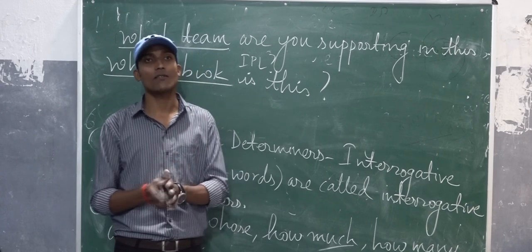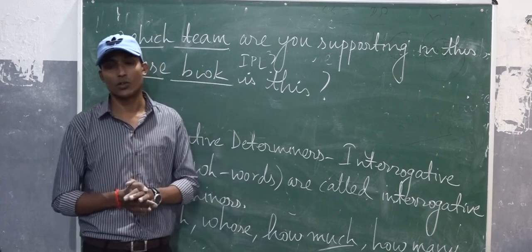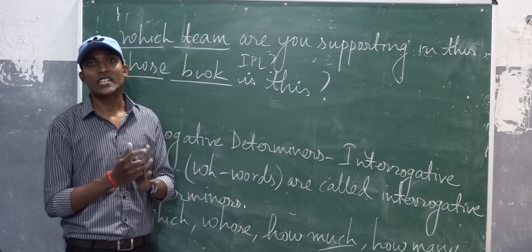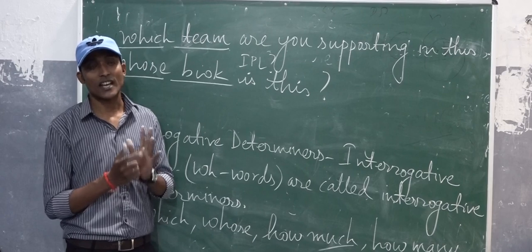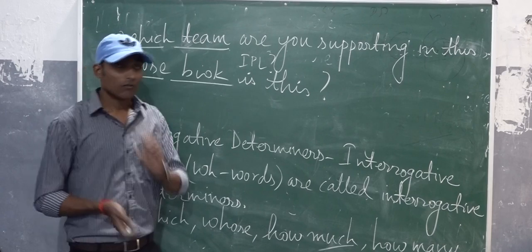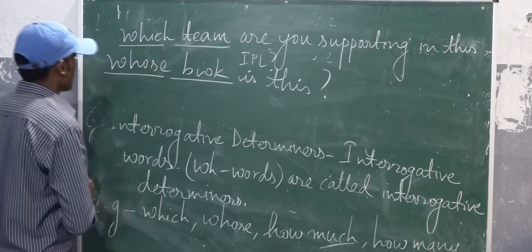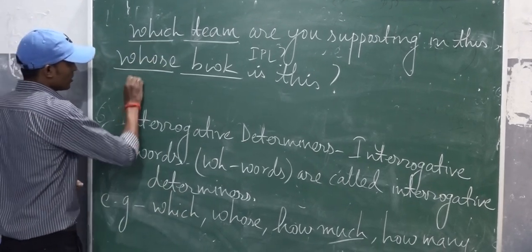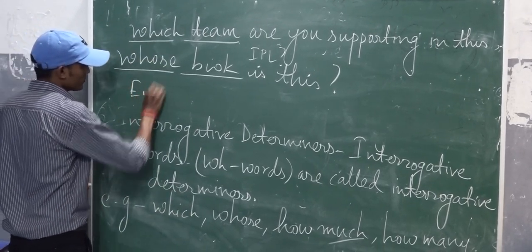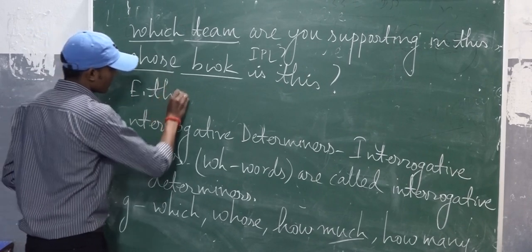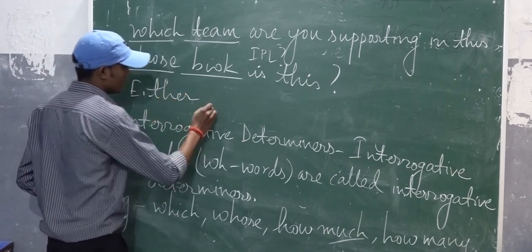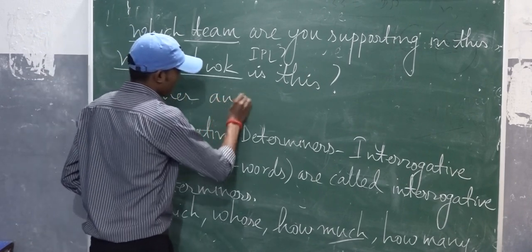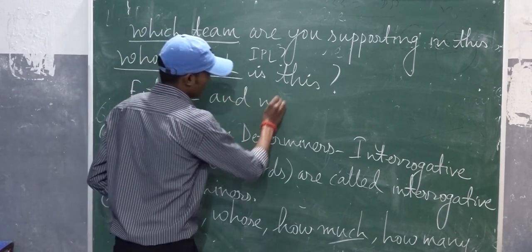Distributive determiners have four words: each, every, either, and neither. One thing to remember is the use of either and neither.